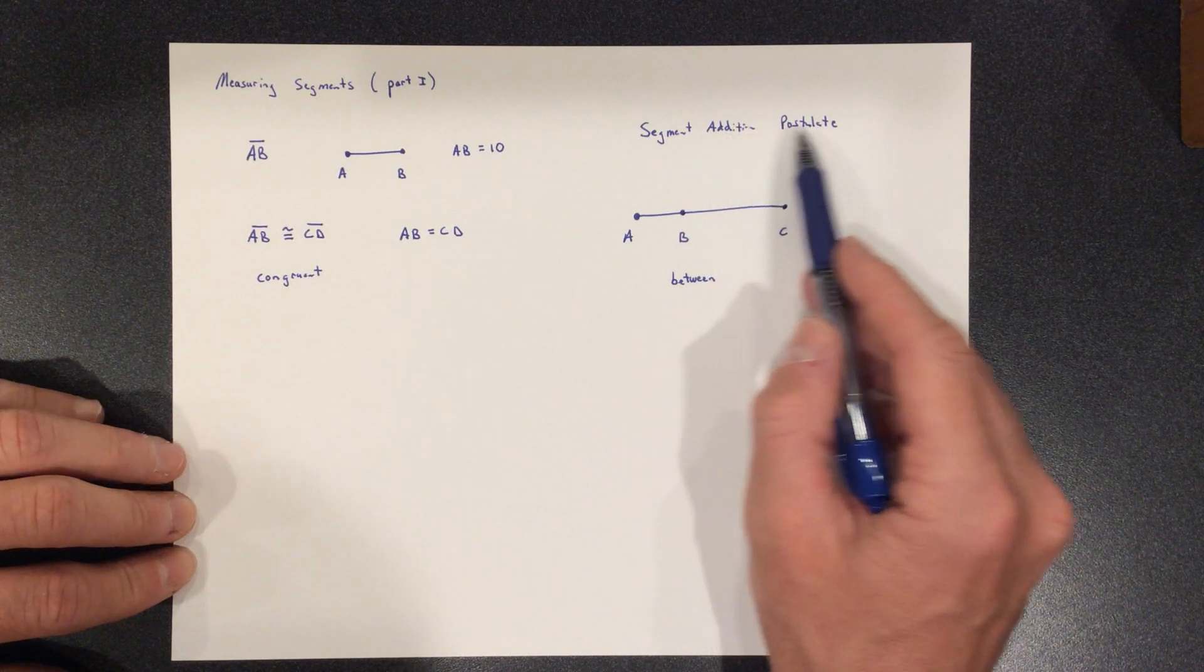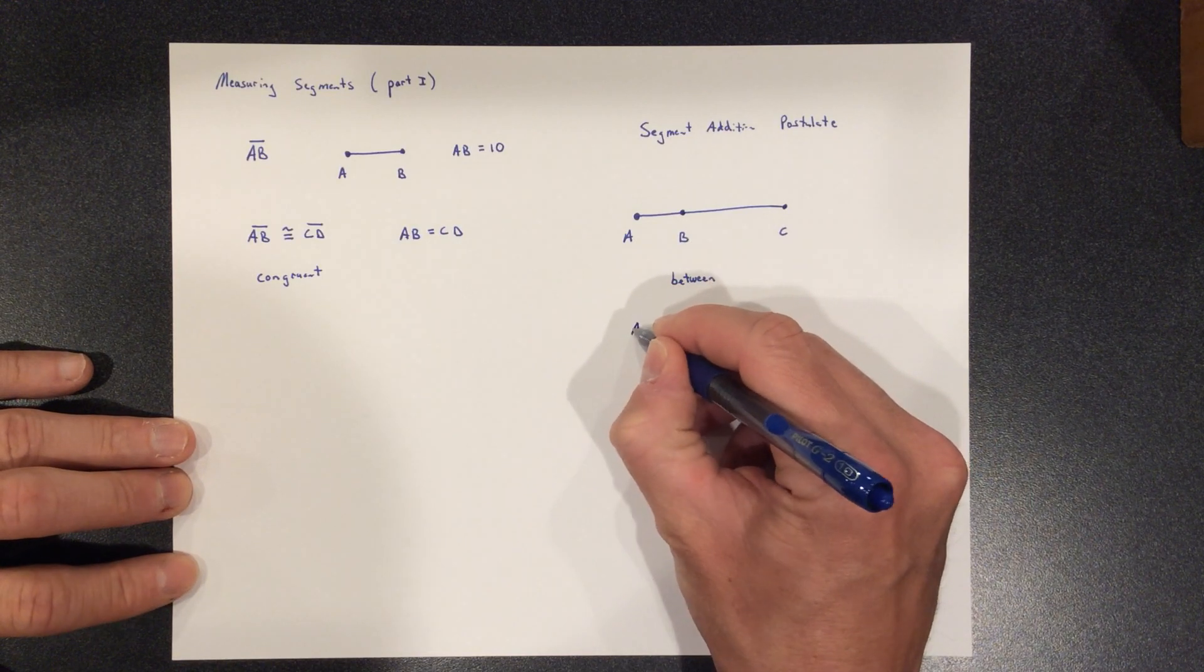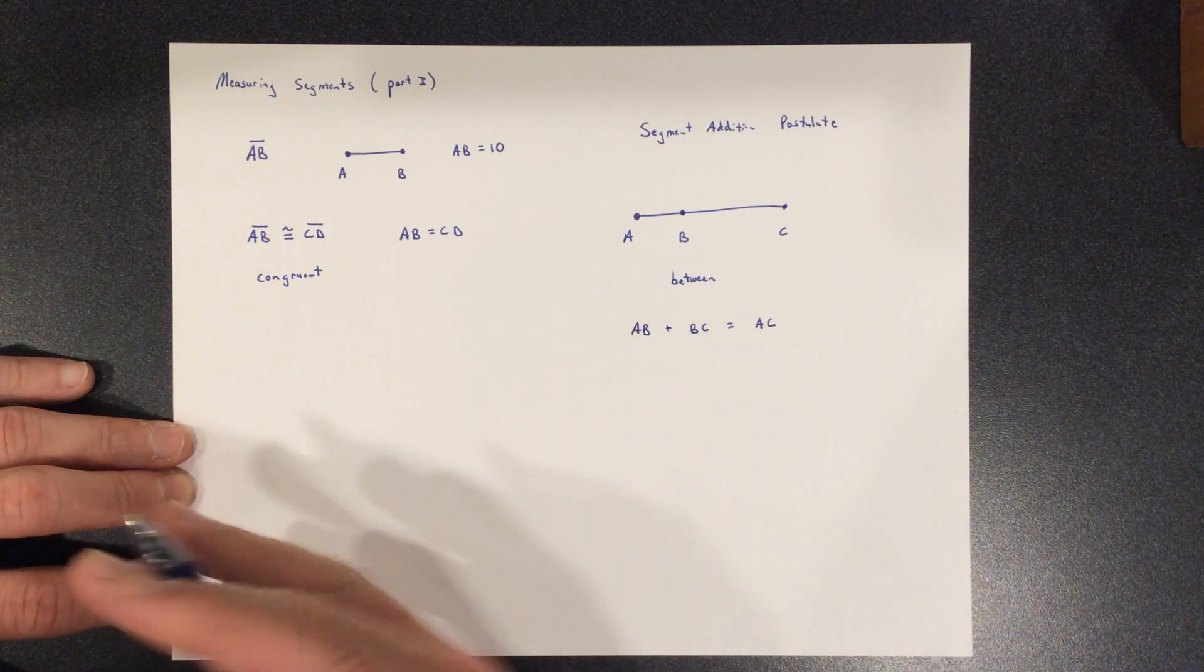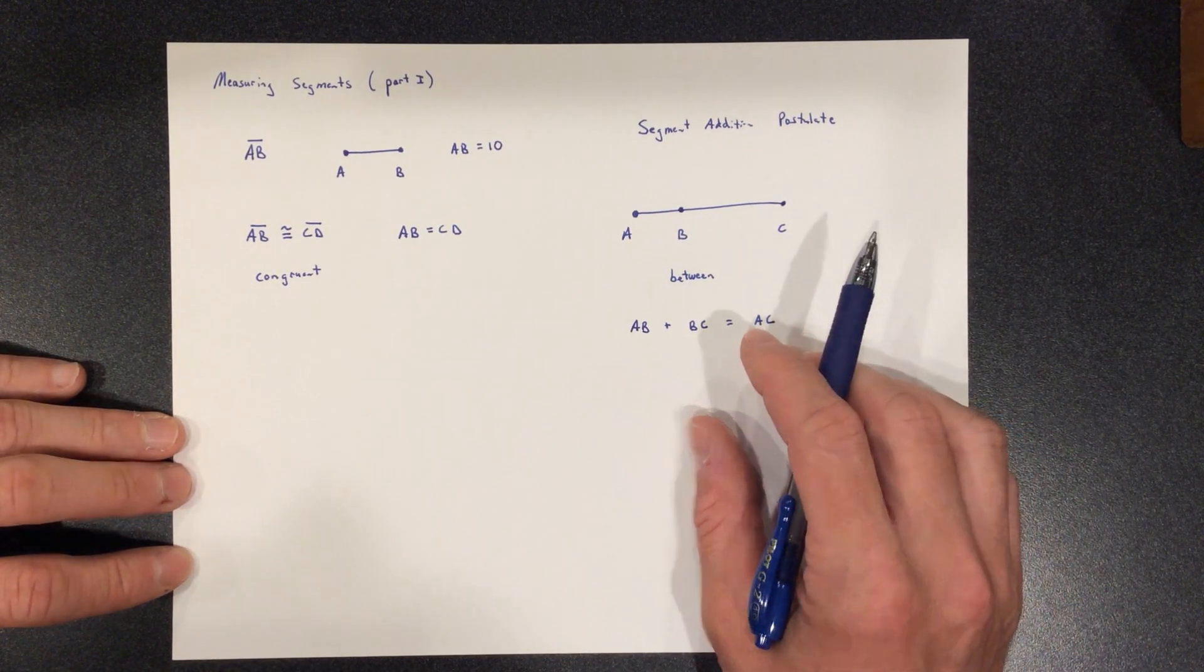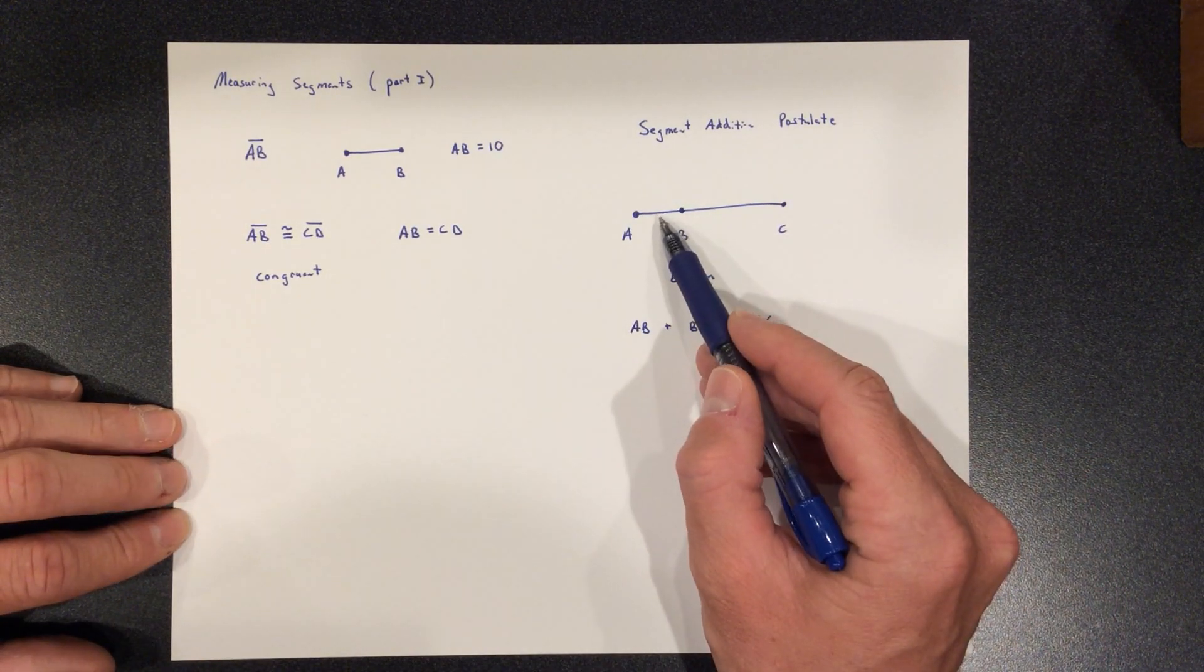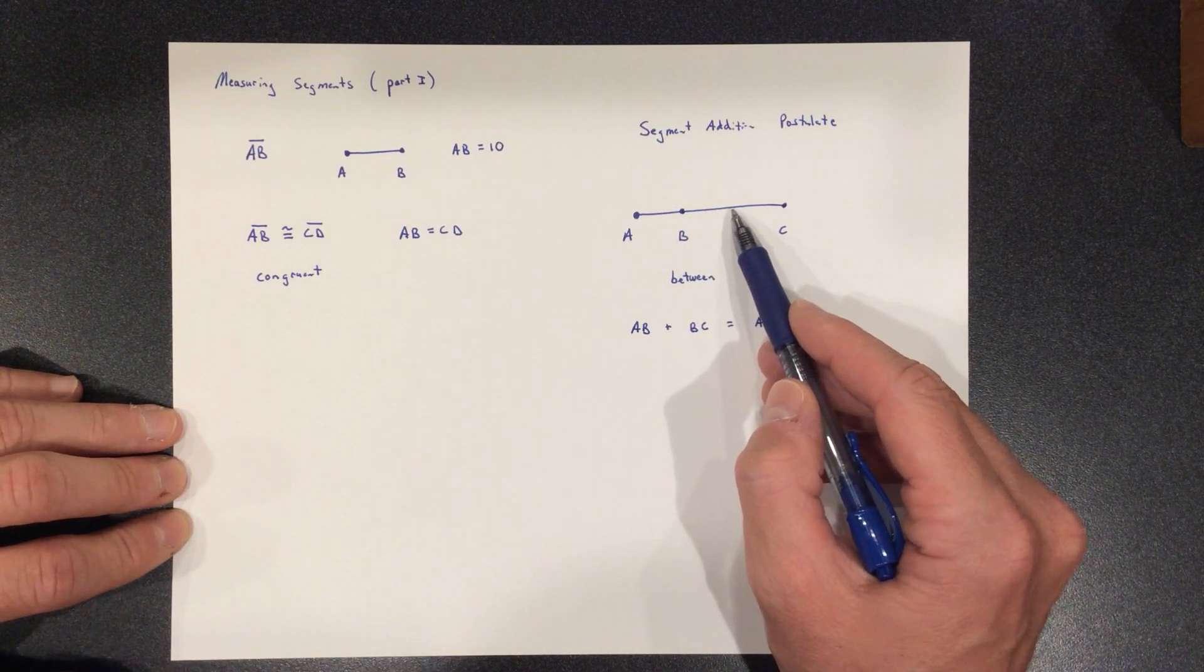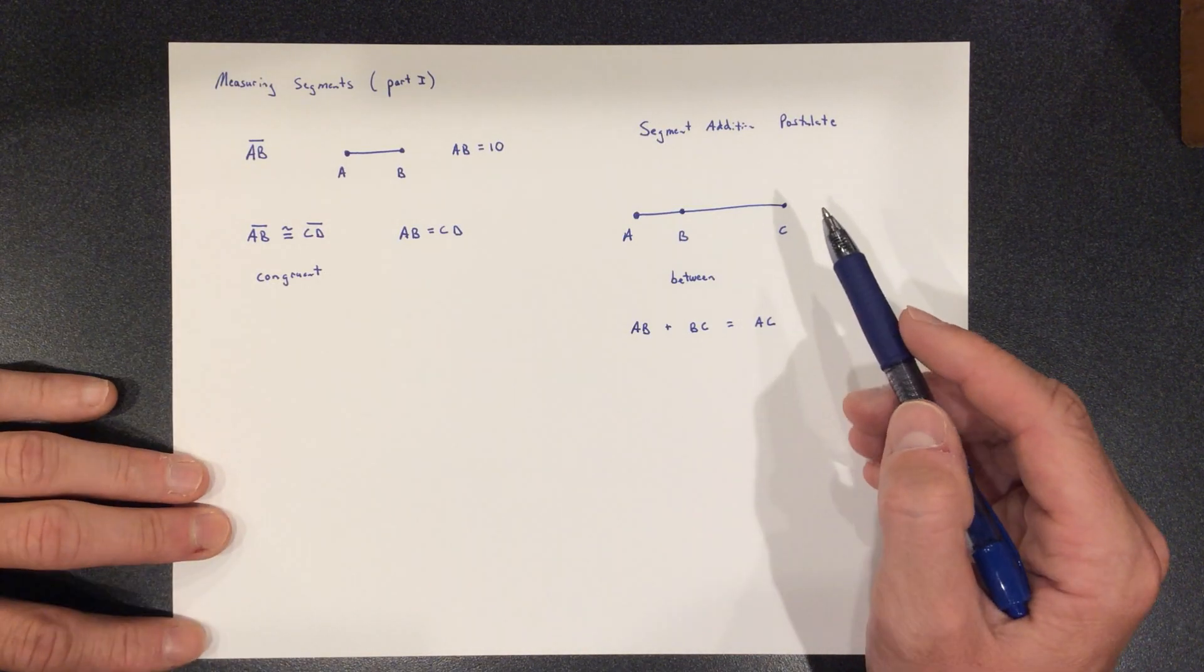So what the segment addition postulate says? Well, it says something pretty obvious. It says that the length of segment AB plus the length of BC has to equal AC. Again, that's not magic. This isn't something you had to look up in a geometry book and be like, oh my goodness, I can't believe where did they get that from. Don't overcomplicate geometry sometimes. This is just saying that if you take the first part and you add the second part, that you equal the total. And I hope, hopefully that's pretty obvious at this point that if this is three inches and this is five inches, that the whole thing is then eight inches.